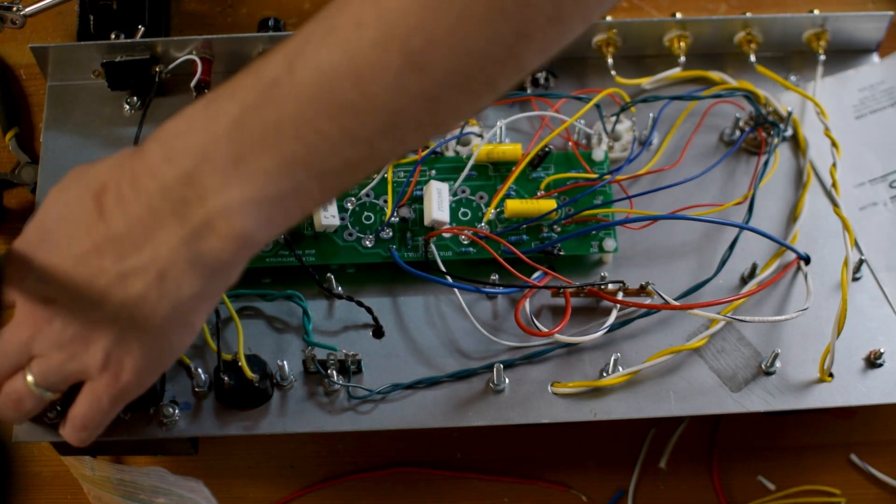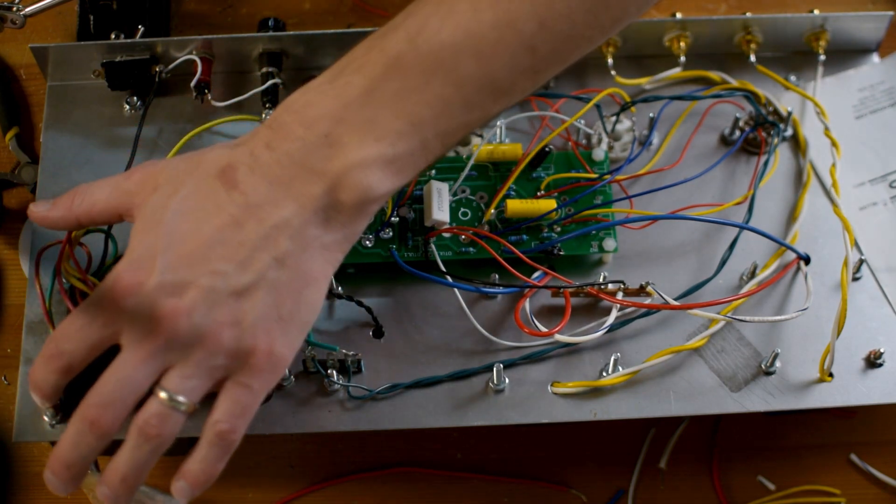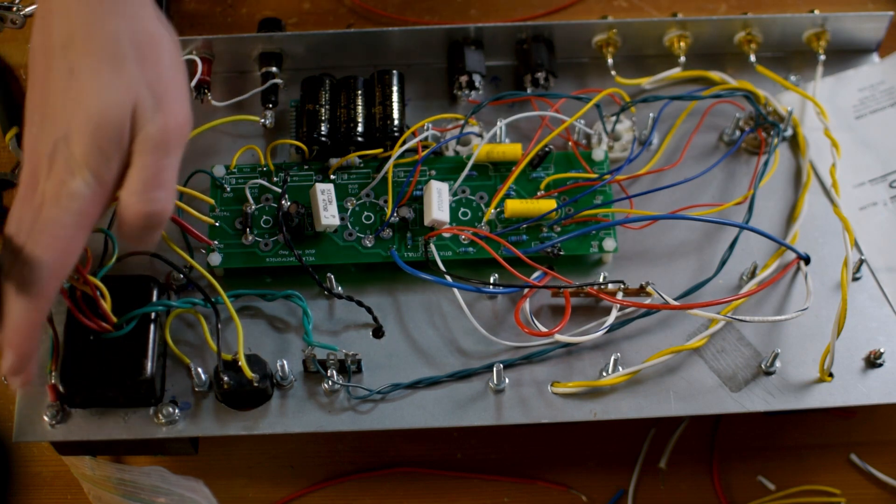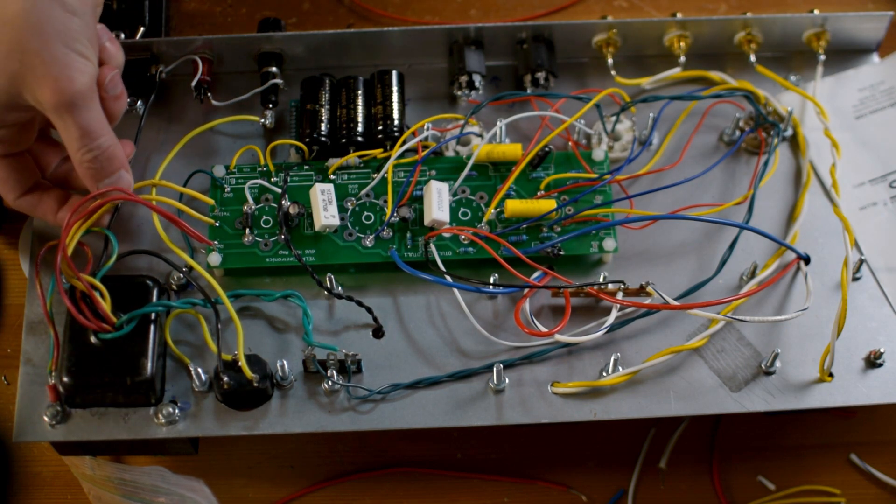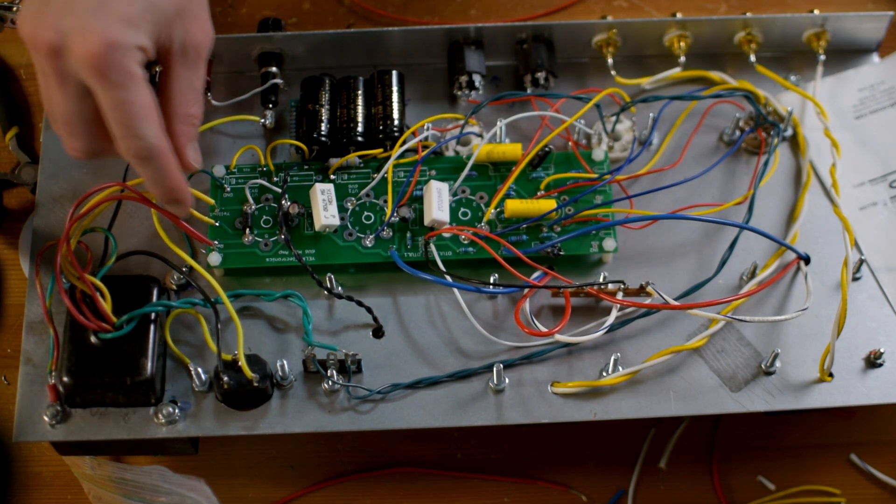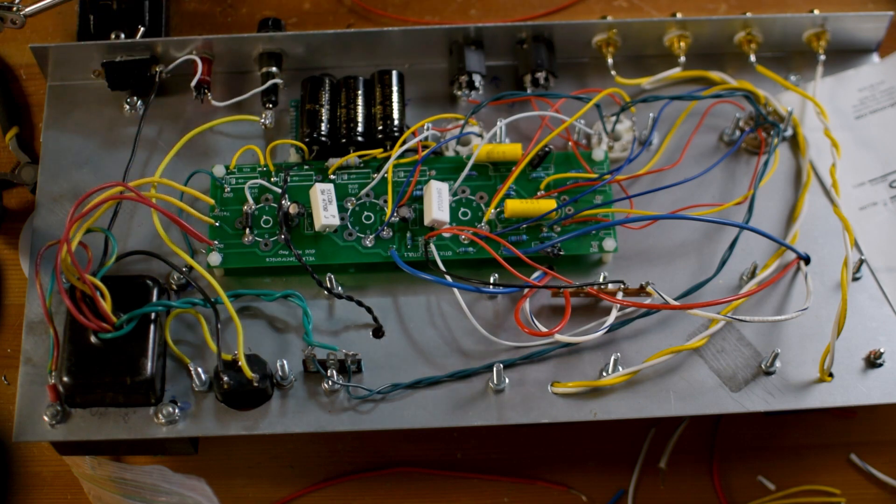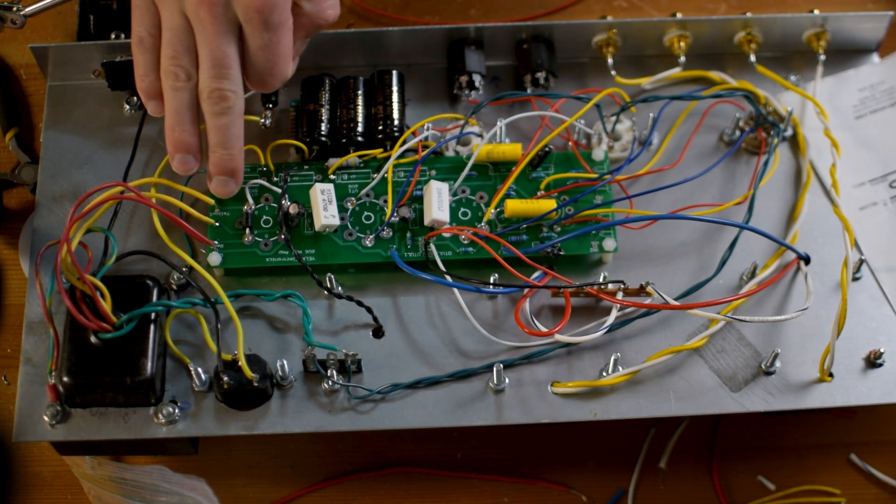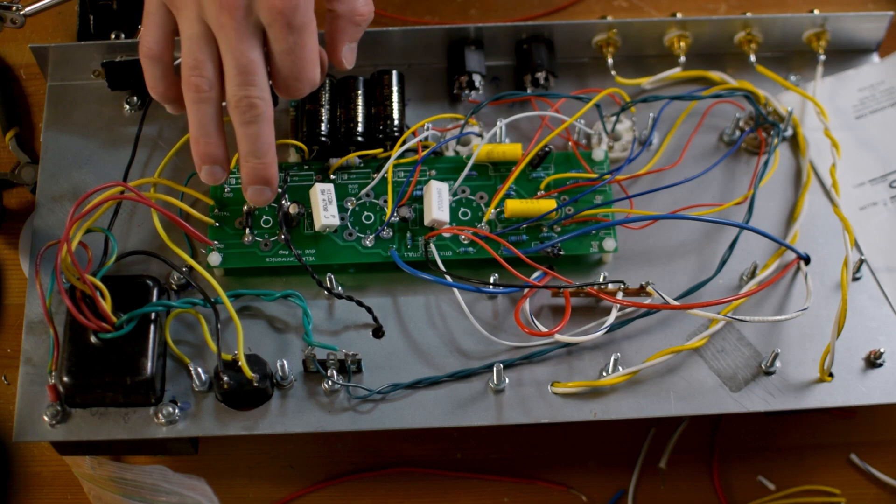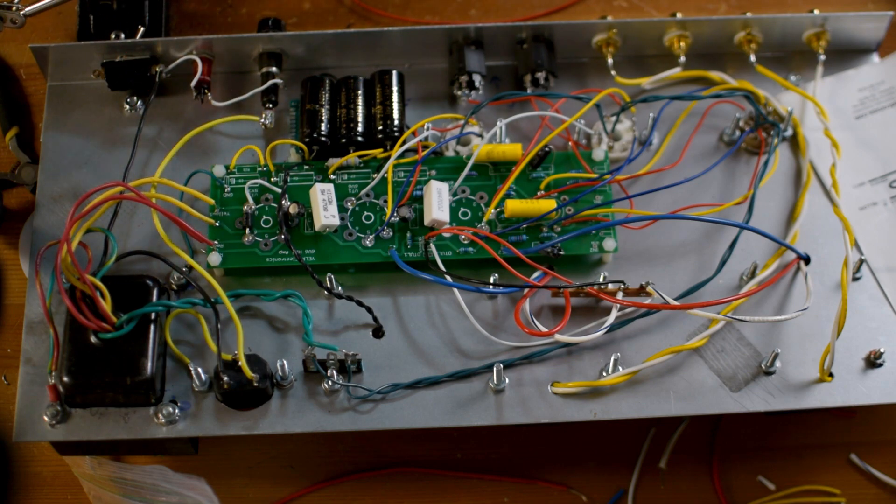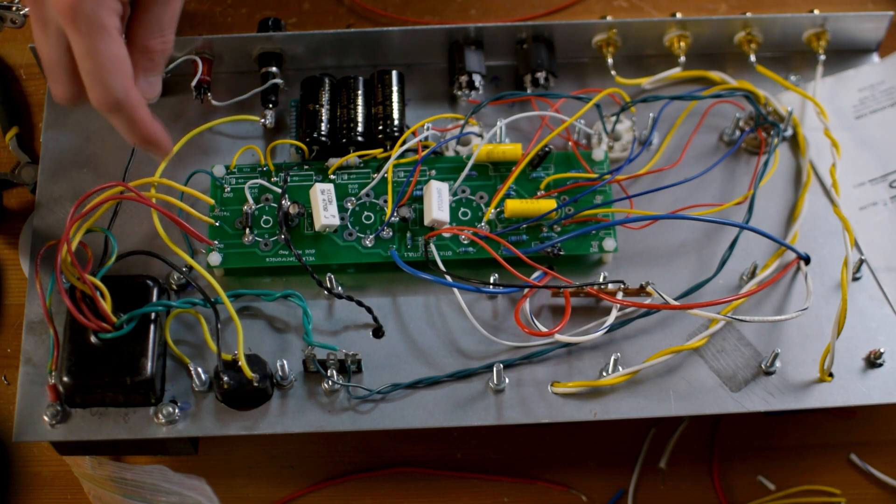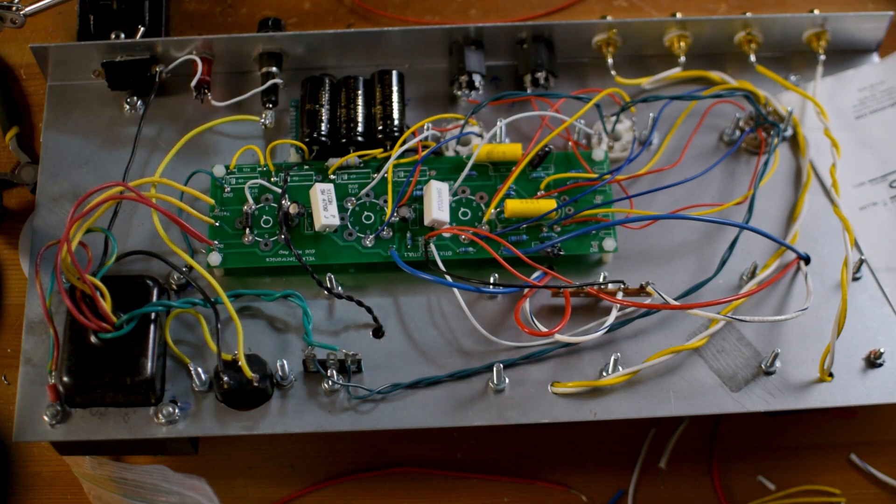We've got some center taps here that are bolted over here to the chassis to ground right over here. We've got these yellow wires, these are the 6.3 filaments. Now I decided to go with solid state rectifier so I'm not actually using them, but they still are wired into the circuit and could be connected to a tube rectifier if I would choose to add one. I would need to drill a hole and add another socket, but I guess I could probably just tie them off. It really doesn't matter though.